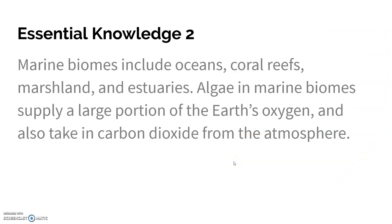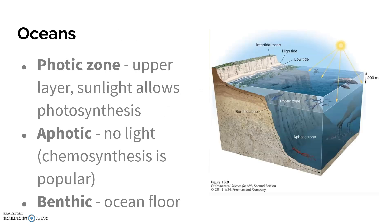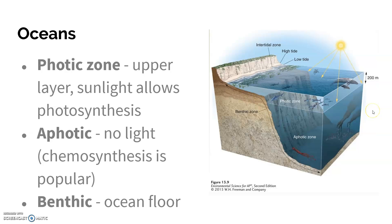Marine biomes are saltwater and include oceans, coral reefs, marshlands, and estuaries. Algae in marine biomes supply a large portion of the Earth's oxygen and also take in carbon dioxide from the atmosphere. In the ocean, you also have distinct zones: the photic zone, where light is present, and the aphotic zone, where there is no light. That light distinction determines what organisms can grow there.